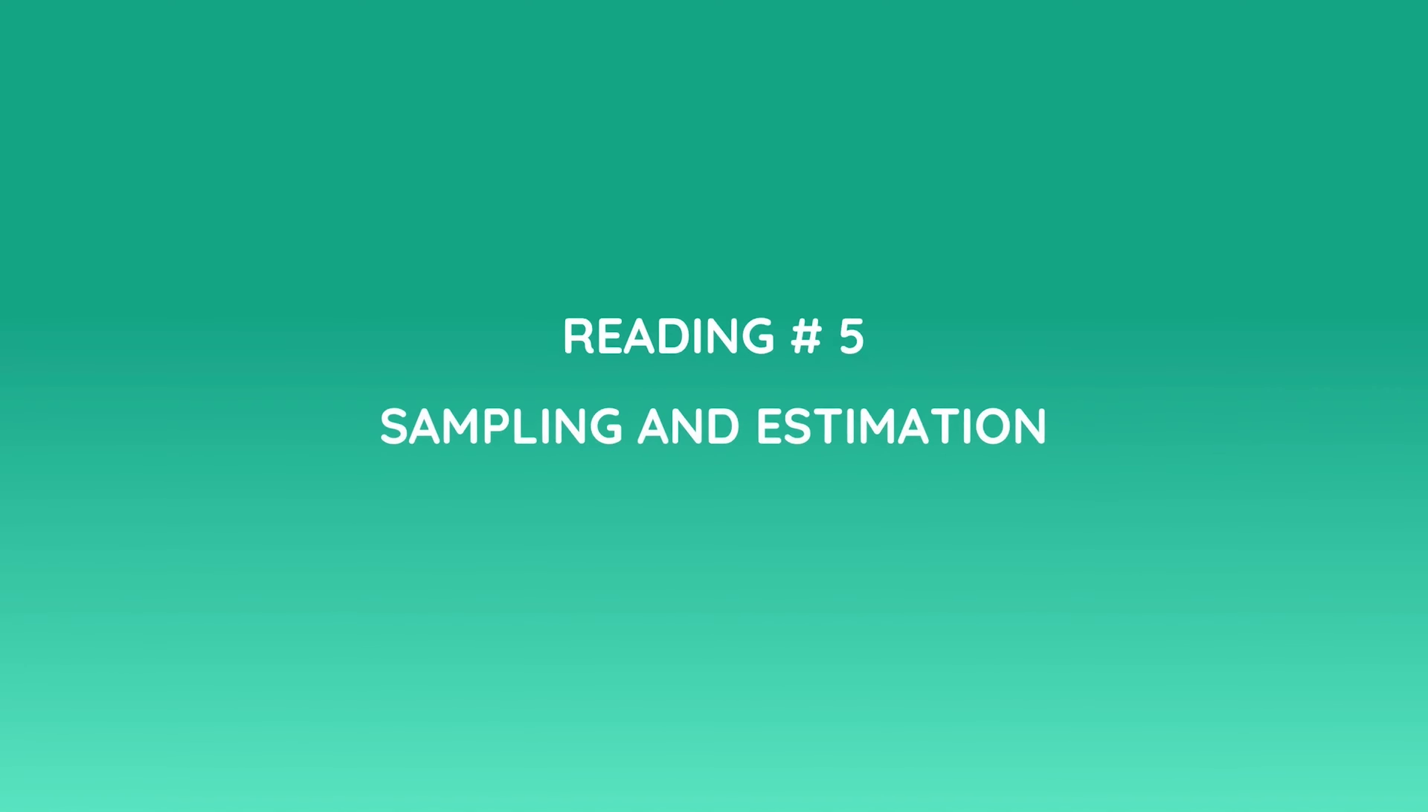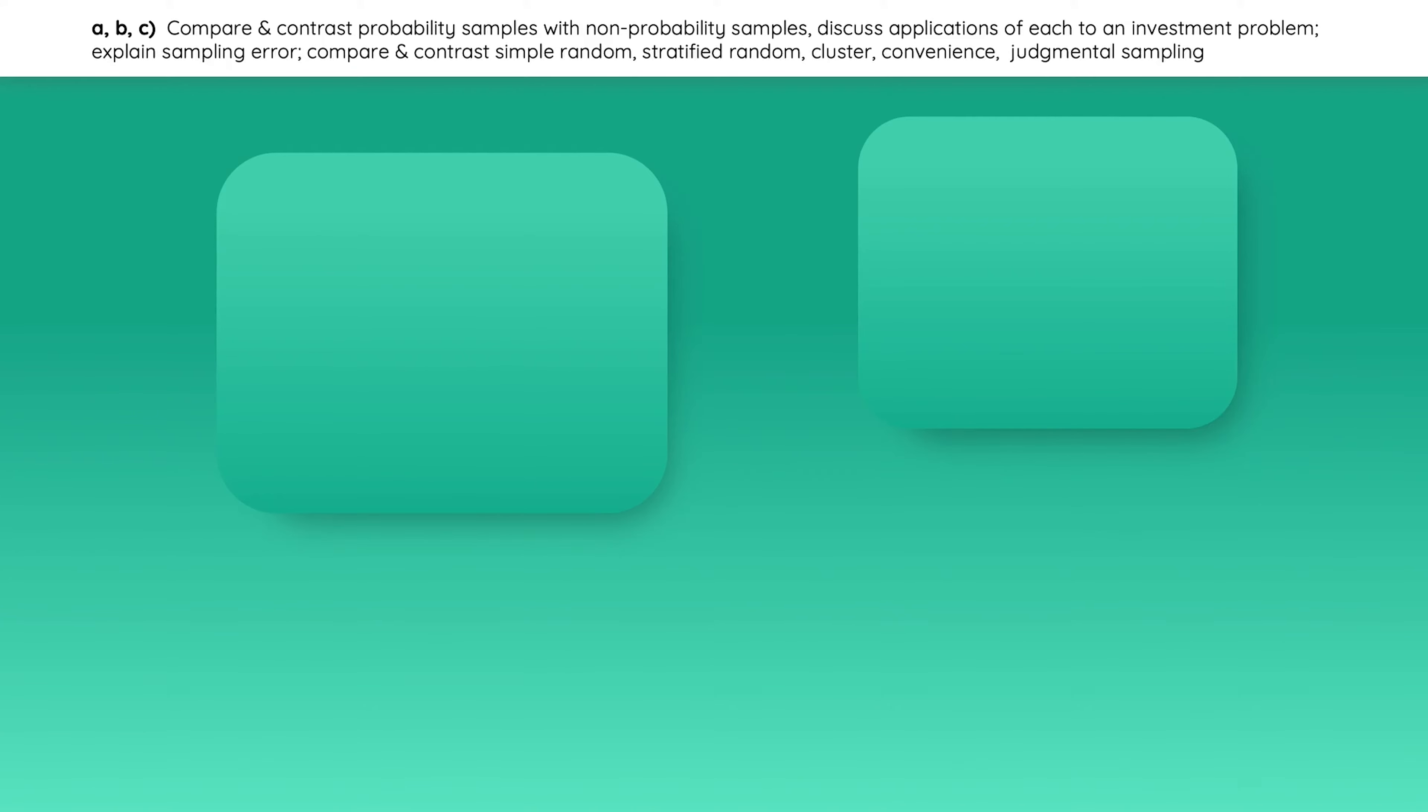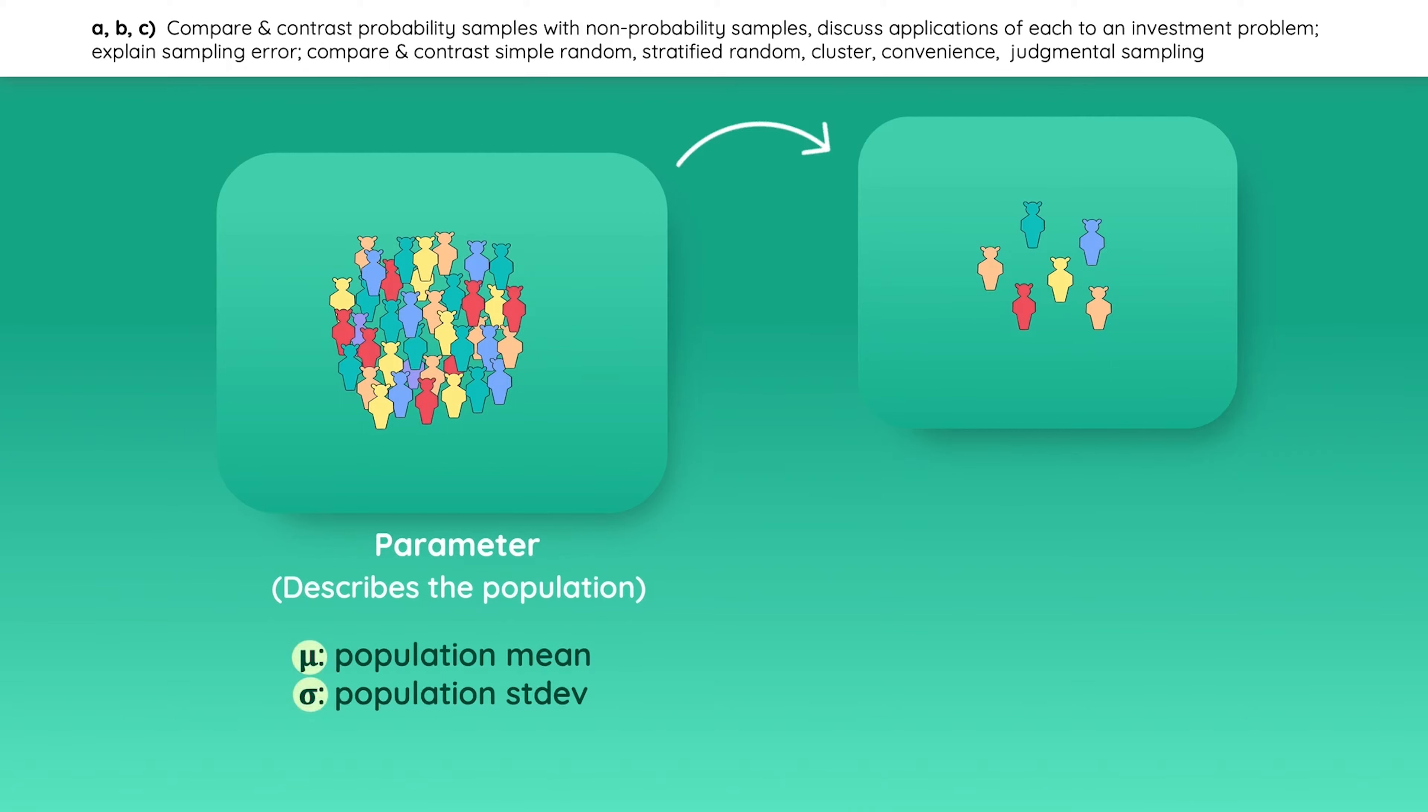Welcome back to this next reading called Sampling and Estimation. Let's start with the big picture. Here we have a population and a sample taken from that population. A parameter is any value that describes the population such as its mean or standard deviation. A sample statistic is used to describe the sample. The focus of this reading is to be able to obtain information or make inferences about a population by looking at a sample.